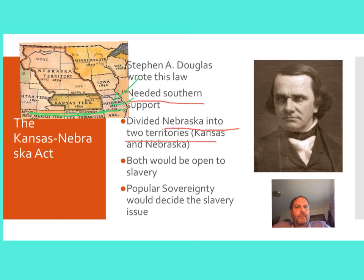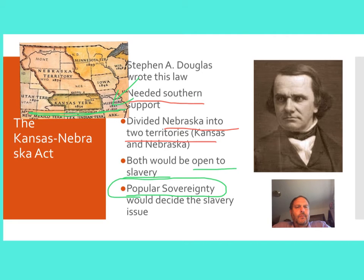What he did was he said both of these territories are going to be open to slavery. He thinks that's going to make the southerners happy because perhaps southerners will head into Kansas and Kansas could become a slave state. And Nebraska is probably going to make the north happy because for sure that's going to become a free state. And then he comes up with this idea of popular sovereignty — so that when the Kansas or Nebraska territory did apply for statehood, it would be up to the citizens of those territories to vote on whether they were going to come in as a free state or a slave state.